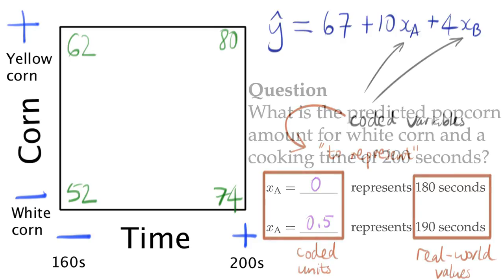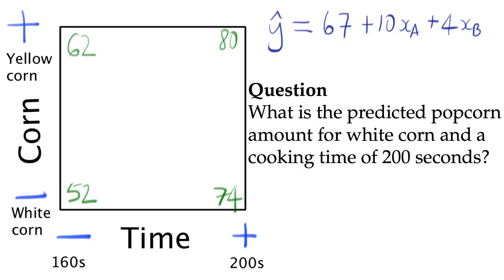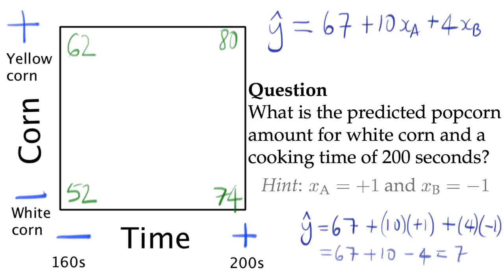Now I have another question for you. What is the prediction for the case when we are using white corn and a cooking time of 200 seconds? Feel free to pause the video and answer that question. I'll give you a hint if you are stuck. Xa is coded as plus 1 for 200 seconds of cooking time, and xb is coded as minus 1 for white corn. So the prediction is 67 plus 10 minus 4, which gets you a value of 73.